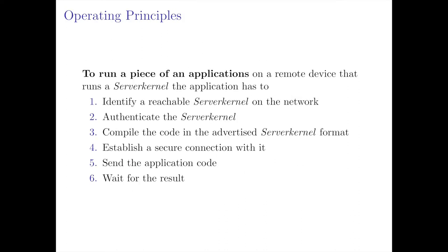The operating principle of Server Kernel from the client point of view has six steps. First, the client identifies a reachable Server Kernel on the network. Then, the client authenticates the Server Kernel, and in this step the client is also authenticated by the Server Kernel. After that, the client compiles the application in the format supported by Server Kernel, which was announced in the previous step. Next, a secure connection is established between the Server Kernel and the client. After that, the compiled code is sent and executed. Finally, the client waits for the eventual results and the connection is closed. It is important to highlight that the Server Kernel is not responsible for getting data for the application — that depends on the application and the developer.